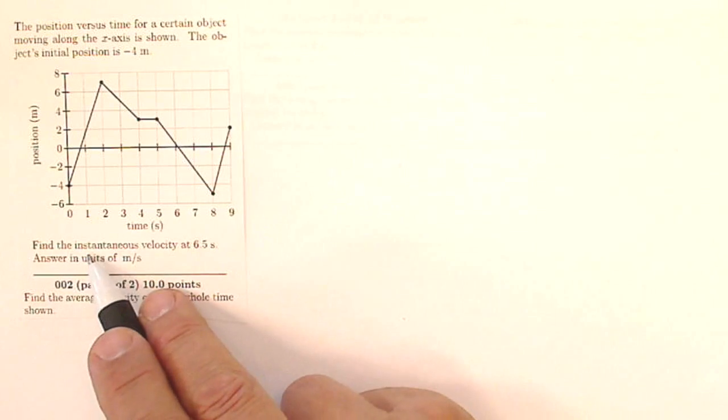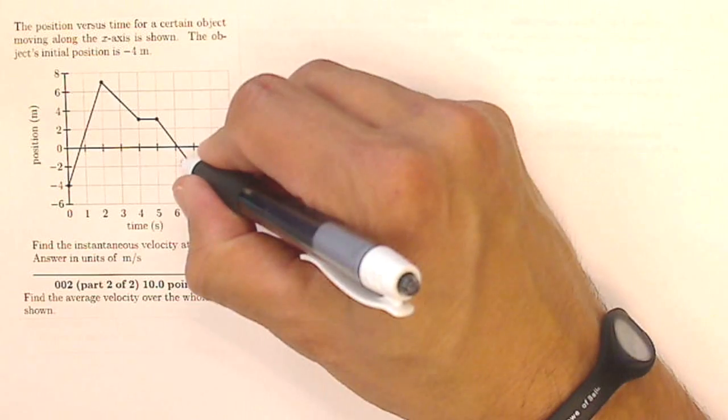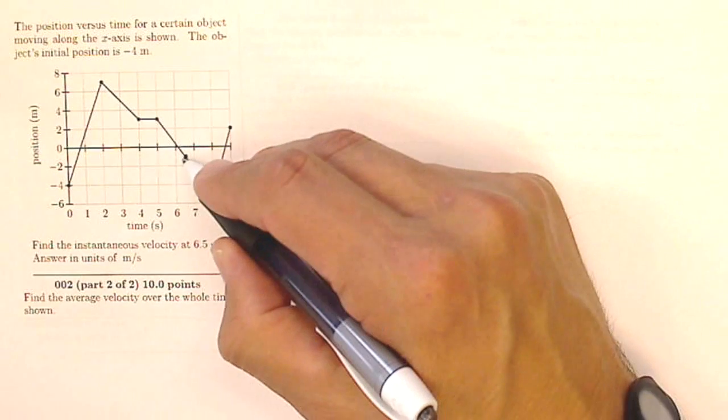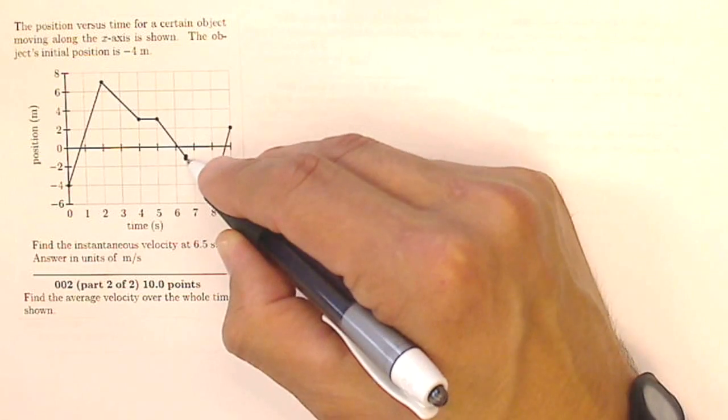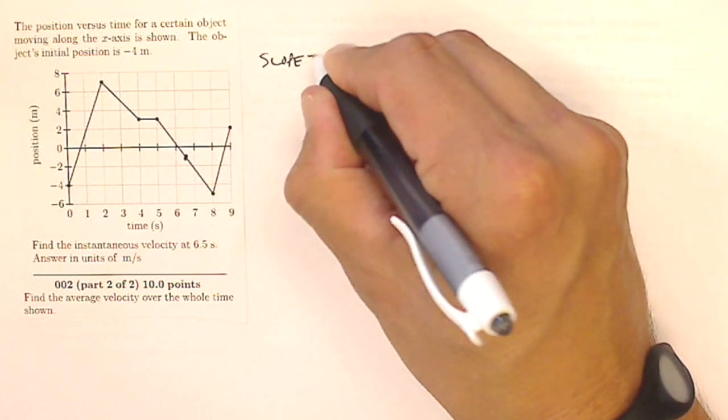It asks, find the instantaneous velocity at six and a half seconds. So six and a half seconds would be right here. How do I find the velocity of this one point? Well, it turns out that the velocity right there, I don't know how much it's rising right there and how much it's running right there to find the slope of this, because I know that the slope is the velocity.